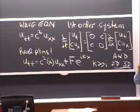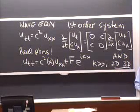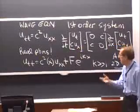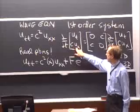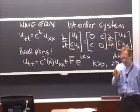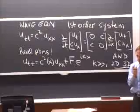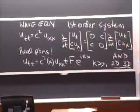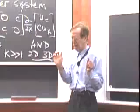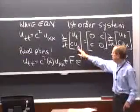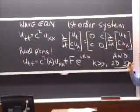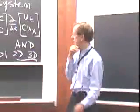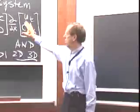What about the second equation? This is typical when you reduce things to a lower-order system — you get an equation which is just an identity. The time derivative of c u_x is c u_xt, and we have c times the x-derivative of u_t, the cross-derivative. That is an identity because u_tx equals u_xt; we can take x and t derivatives in either order.